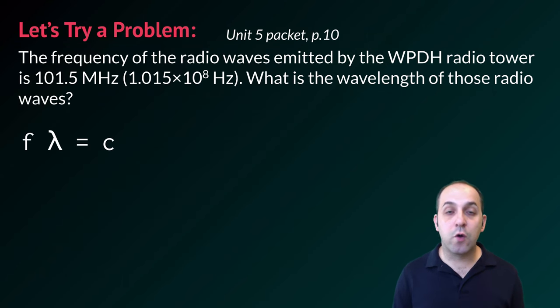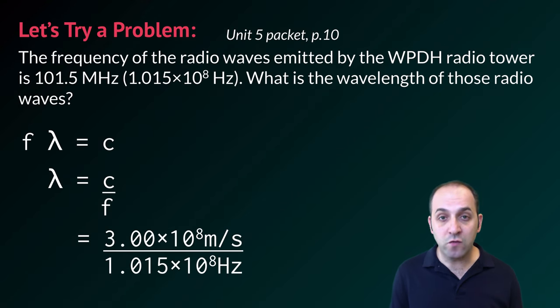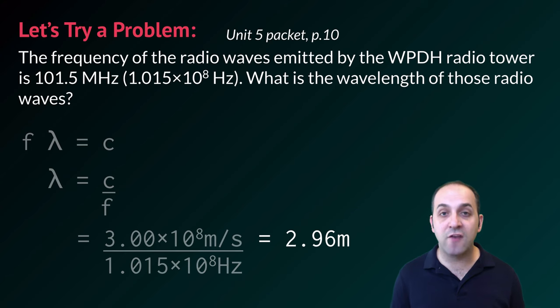In order to do this, we're going to use the relationship that we just discussed. The frequency times the wavelength is going to equal the speed of light. Rearranging this for wavelength, we're going to find that the wavelength is going to be equal to the speed of light divided by its frequency. And then substituting in our values and solving, we'll get a final answer of 2.96 meters. Does that make sense? If it doesn't, take a moment and write down any questions that you have before we move on.